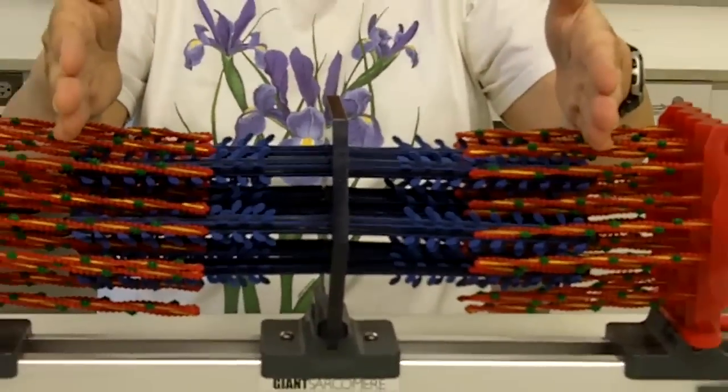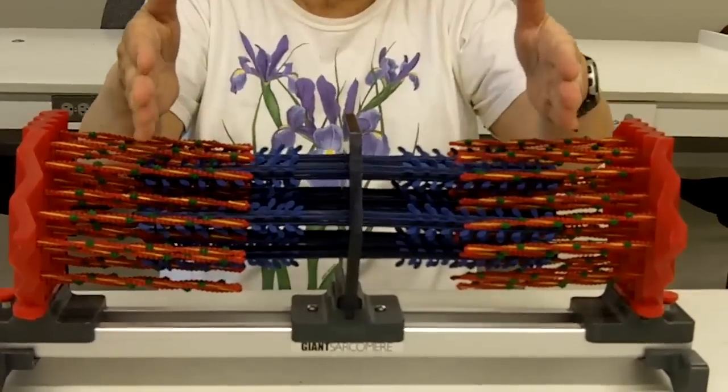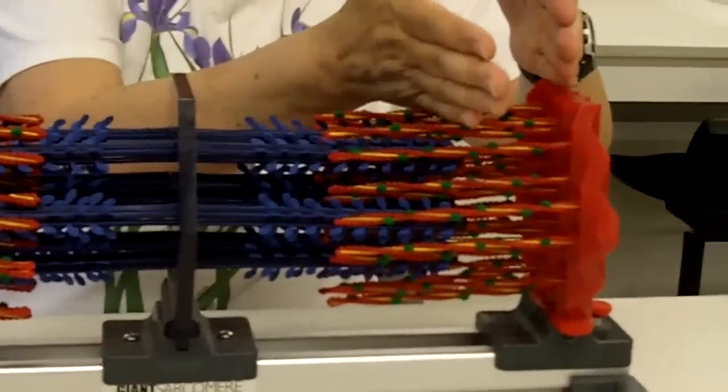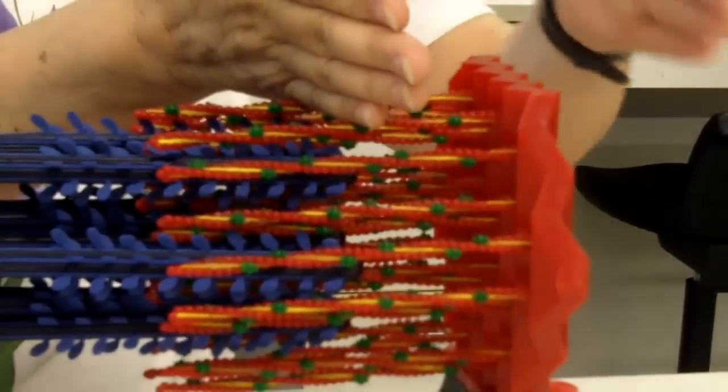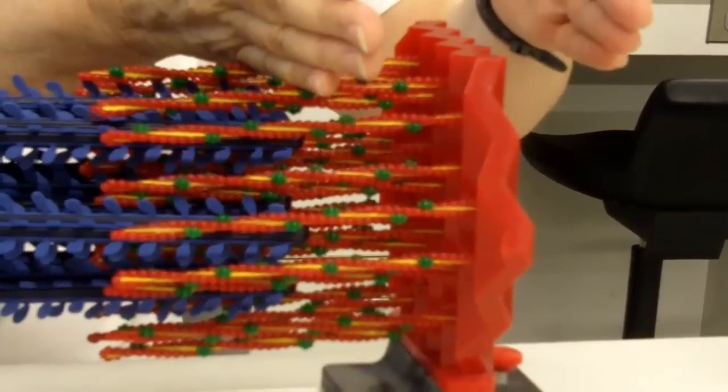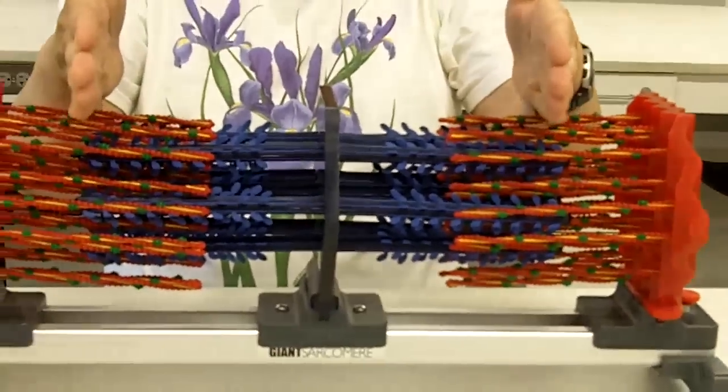The A band, the dark band (D-A-R-K), is where we have only the thick filament. On either side of the Z-disc, we have the I band, the light band (L-I-G-H-T). You notice there's overlap here in the middle of the A band.